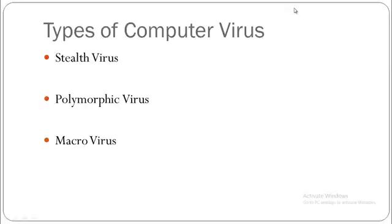Welcome to the next tutorial of ethical hacking and penetration testing via Kali Linux. In the previous tutorial I taught you about different viruses and told you that the polymorphic virus was the most dangerous of all, because if you have sufficient knowledge about writing a virus you can create one virus, program it to create a trojan horse, which infects the computer and creates another virus that changes the binary code — creating a macro virus.